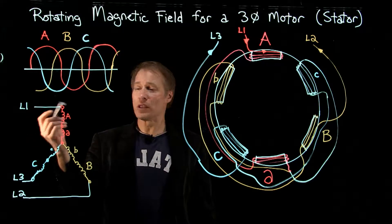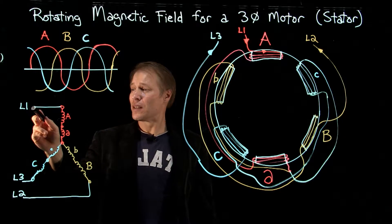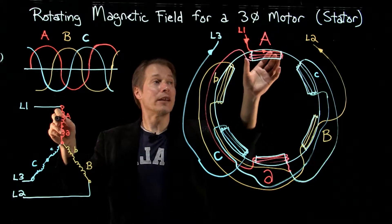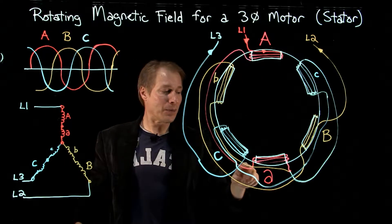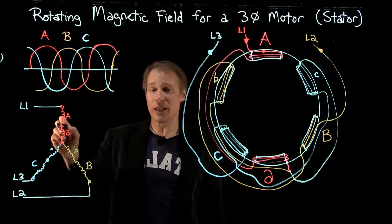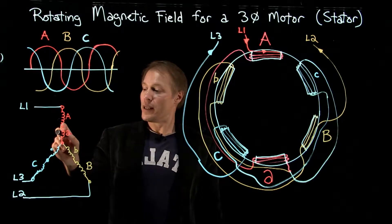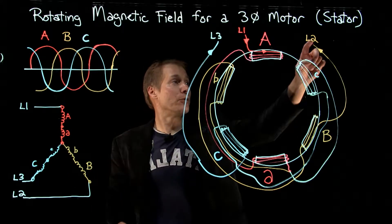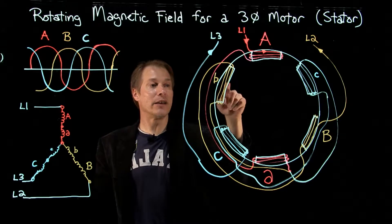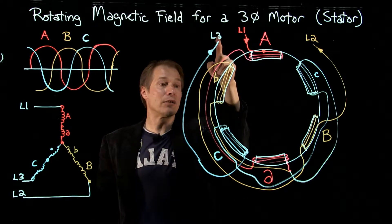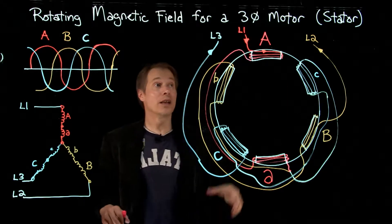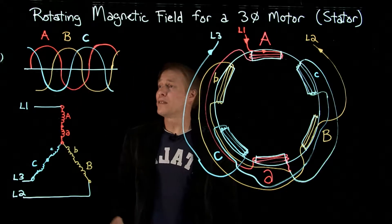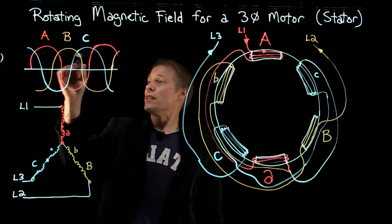So we have L1, which is also the red phase or the A phase. L1 connects to the A coil. In the diagram, L1 connects to the main pole or main coil, with a wire wrapping around connecting it to the secondary coil — shown in the schematic through this point, then to the secondary A coil. Similarly, L2 goes to the B main pole and then to the secondary. L3 goes to the C main and then secondary. The main poles are 120 degrees apart in this motor, and the sine waves are also 120 degrees apart.